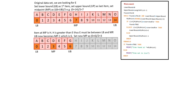The midpoint was H, and we know that H is greater than E, so we can infer that E must lie somewhere between the lower bound and the midpoint. The upper bound therefore now becomes the old midpoint — which was position 7 — minus 1, which is 6.